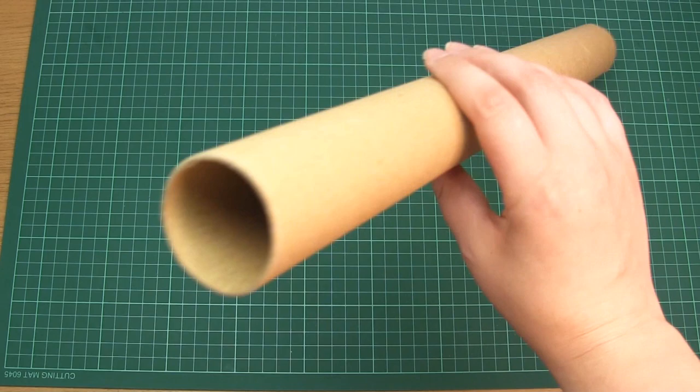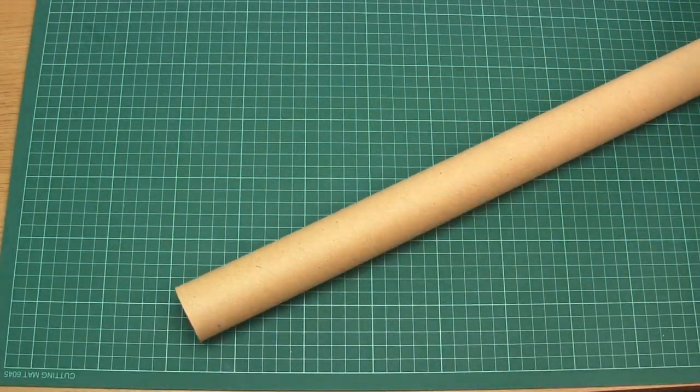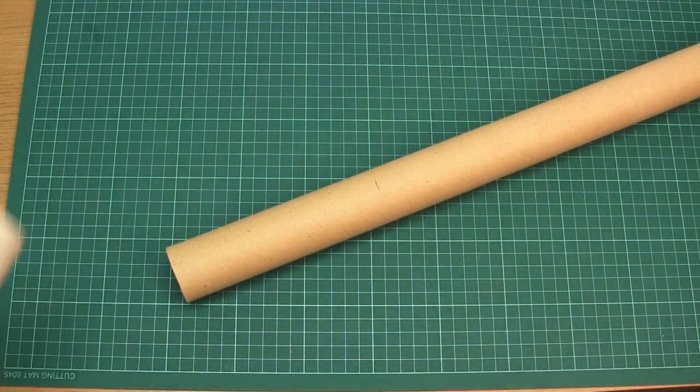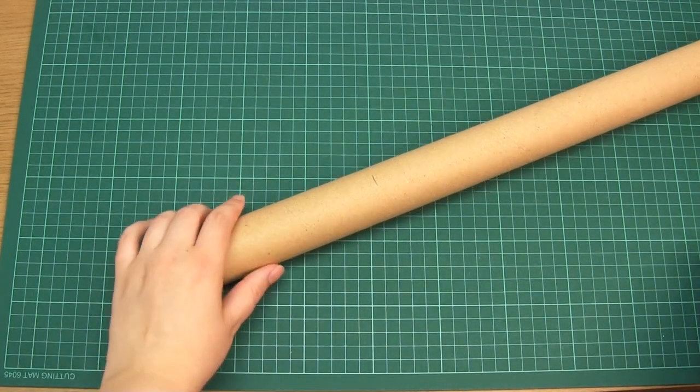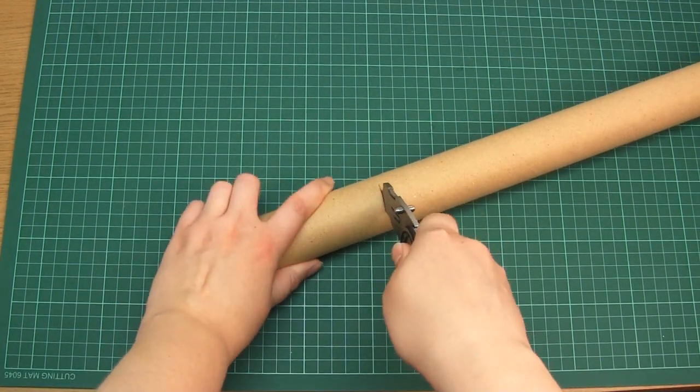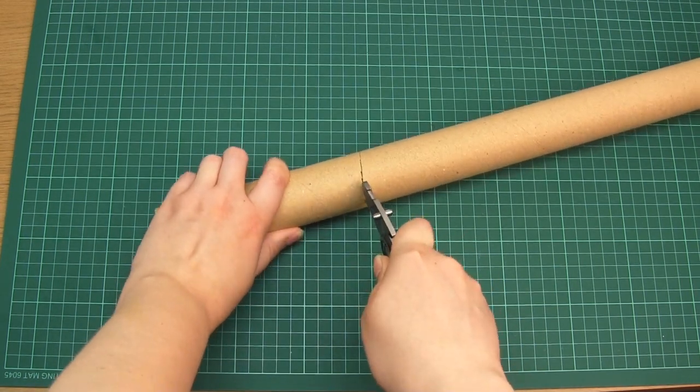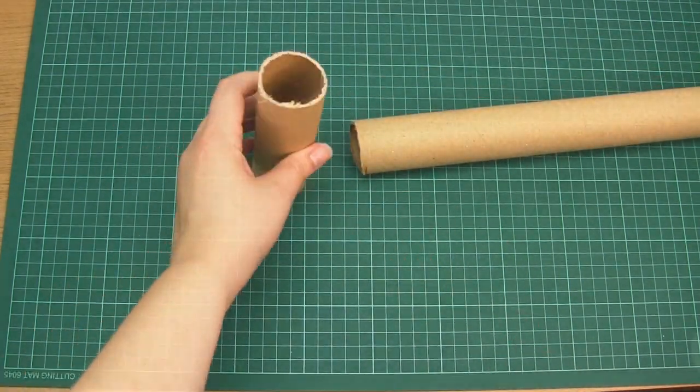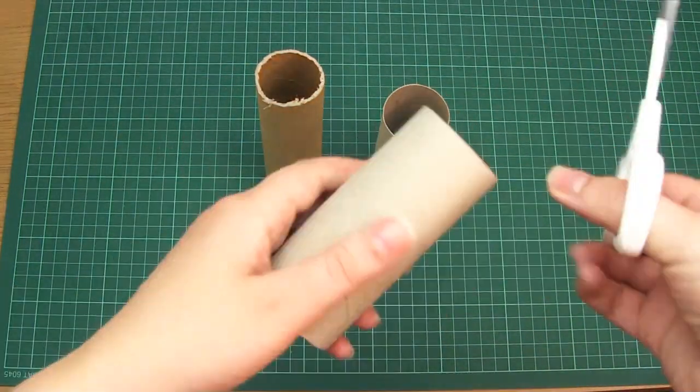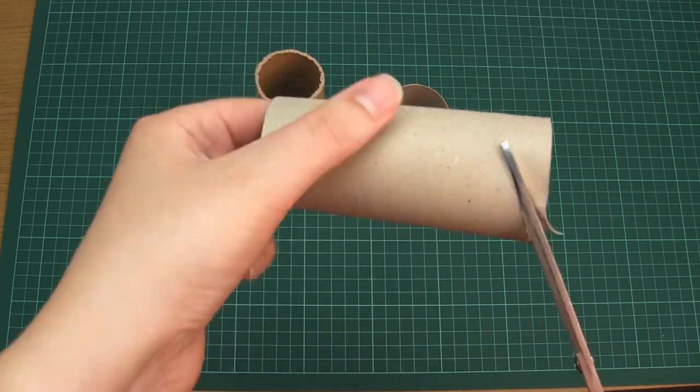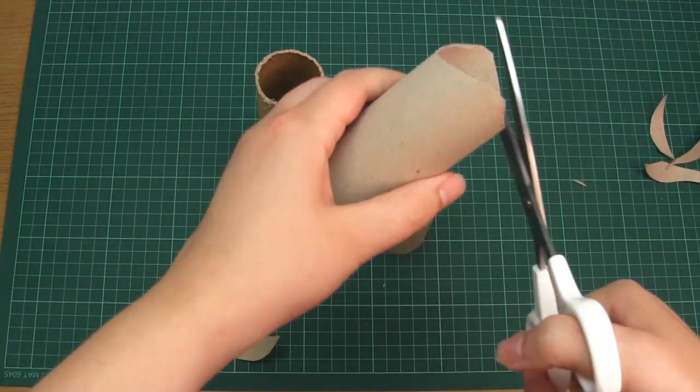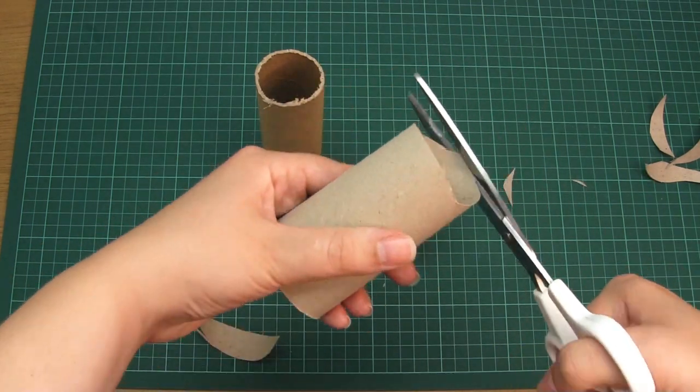The first step is to cut the outer tube, which is the wider tube, to size. Use a utility knife for thicker tubes and scissors for thinner toilet roll tubes. The candle size is personal preference. Cut a wavy top into the outer tube rather than straight across for a more realistic look.